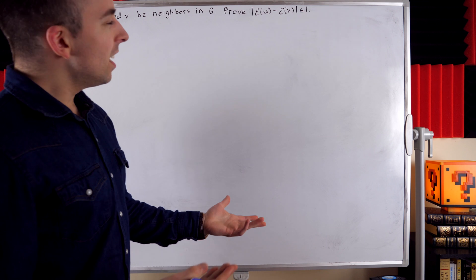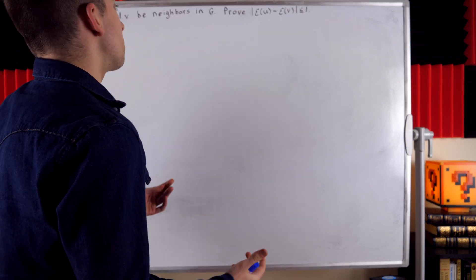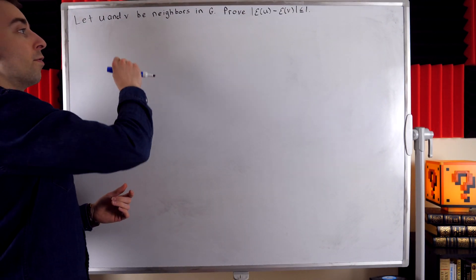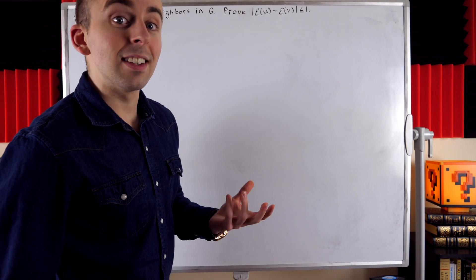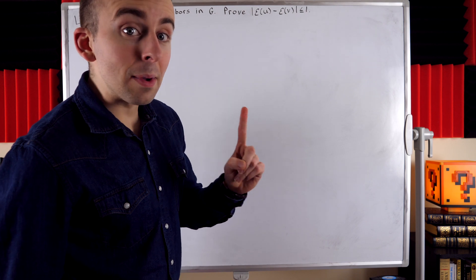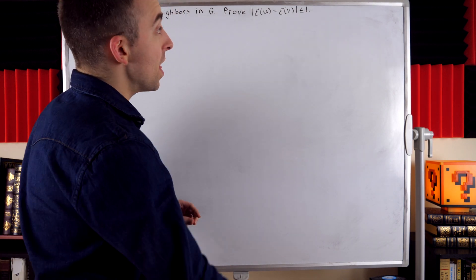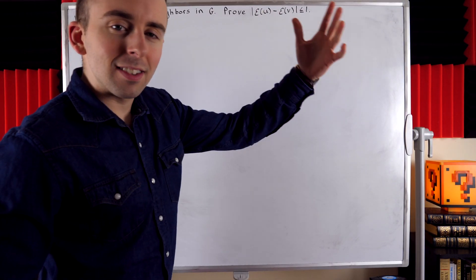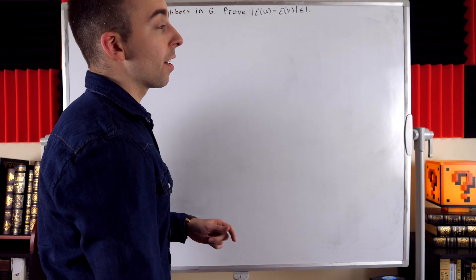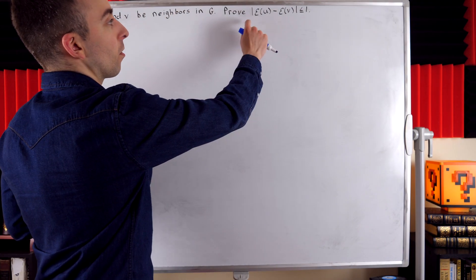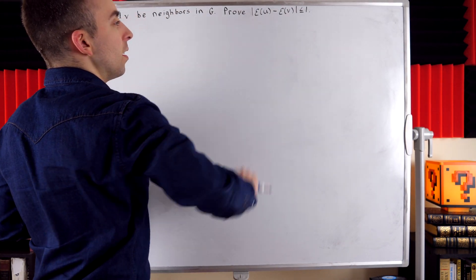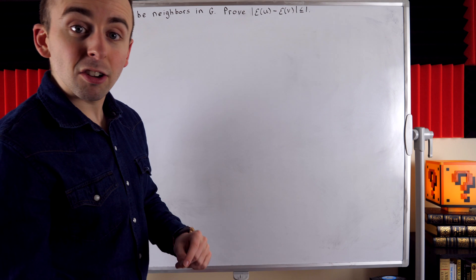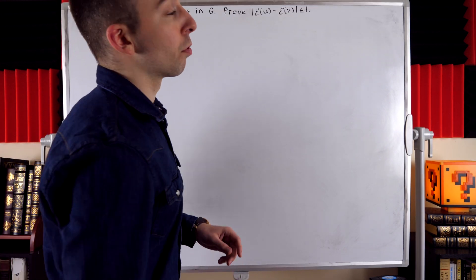With that in mind, it should seem kind of reasonable that if two vertices are adjacent, and thus the distance between them is 1, their eccentricities — their maximum distances to other vertices in the graph — could differ by at most 1. But let's go ahead and prove it.